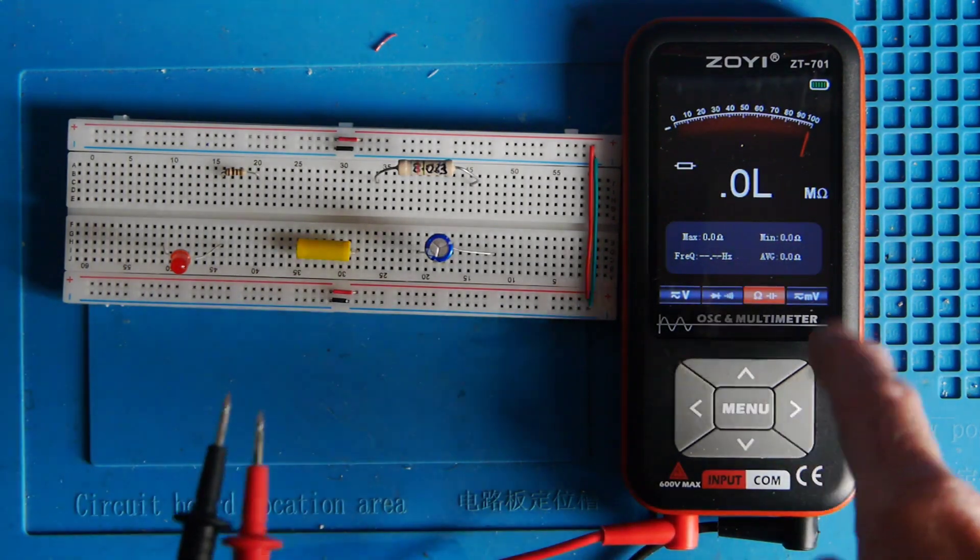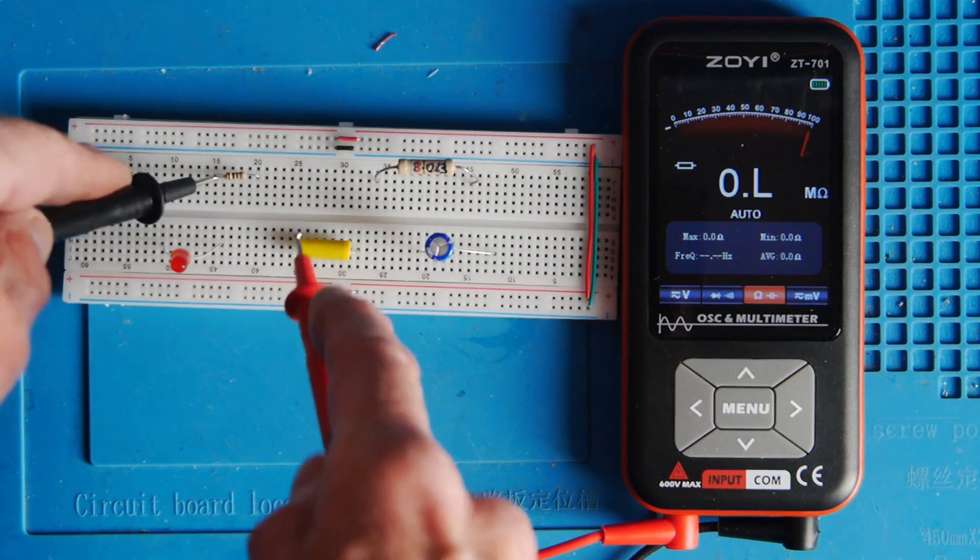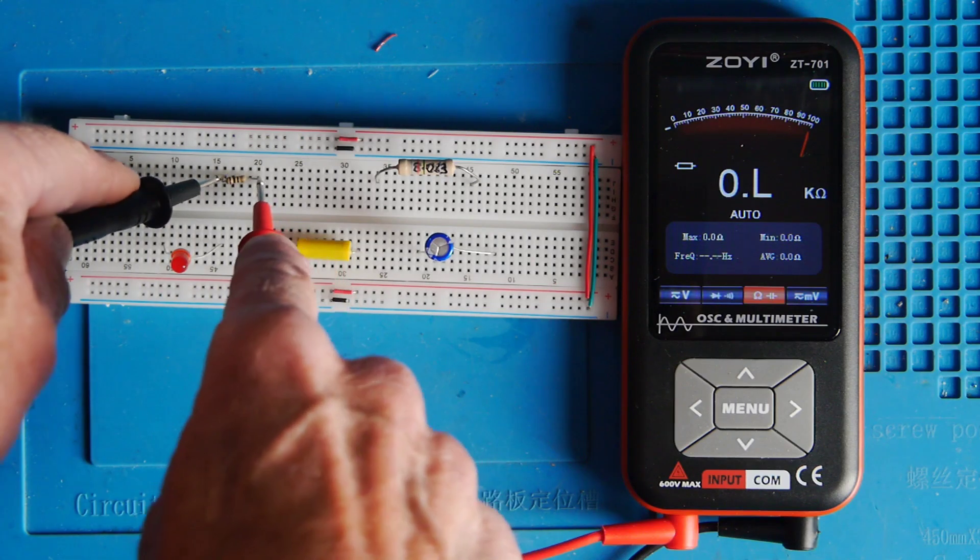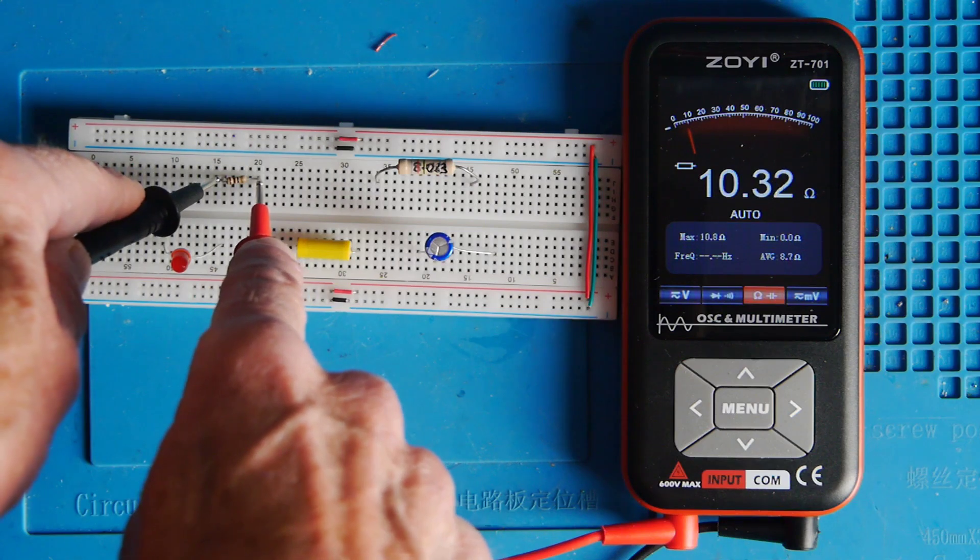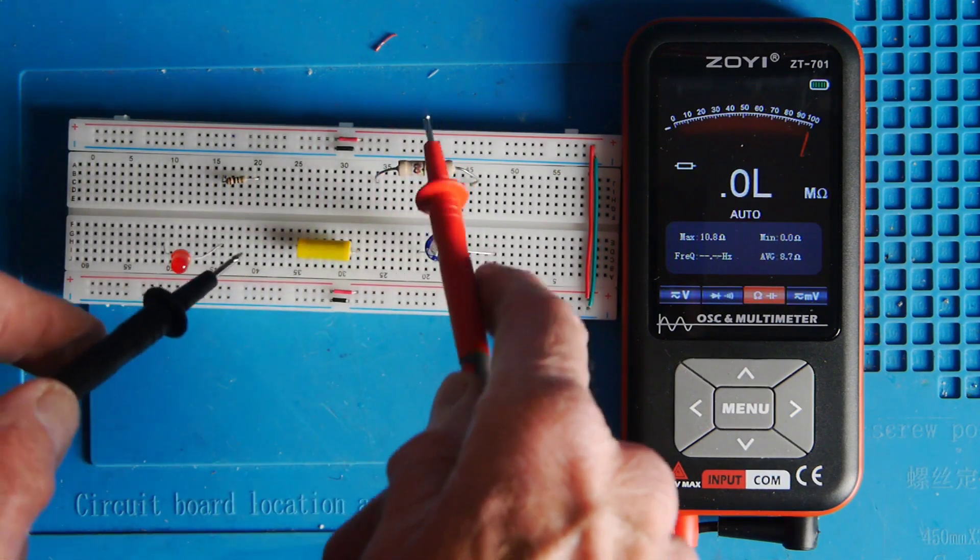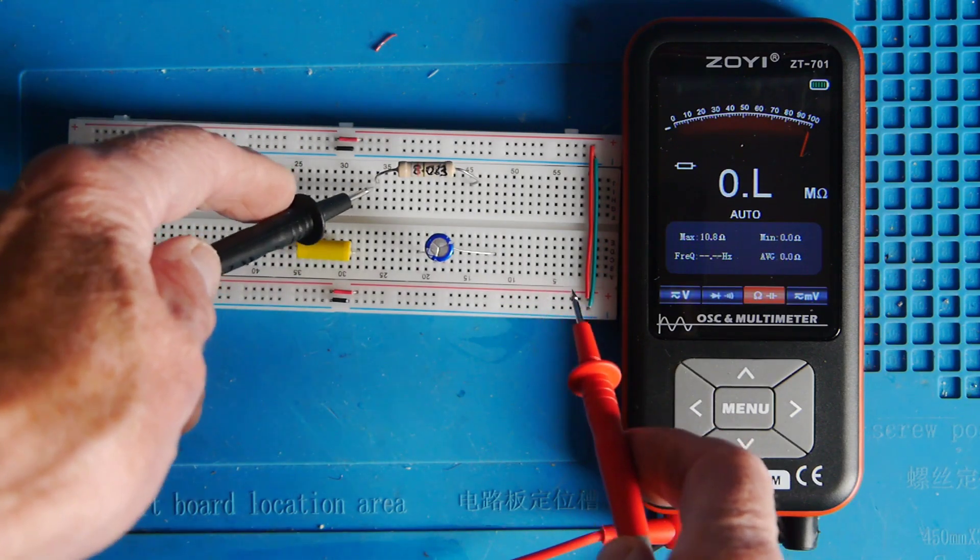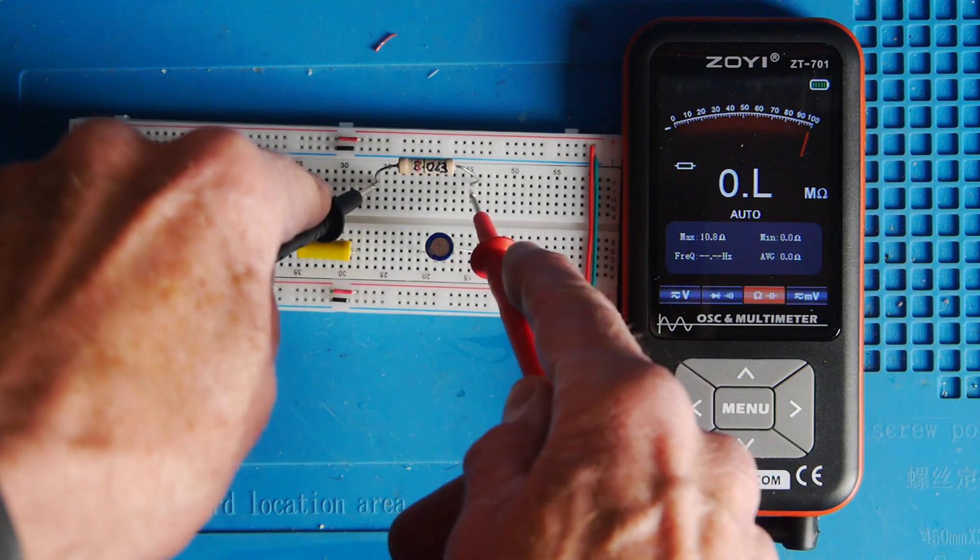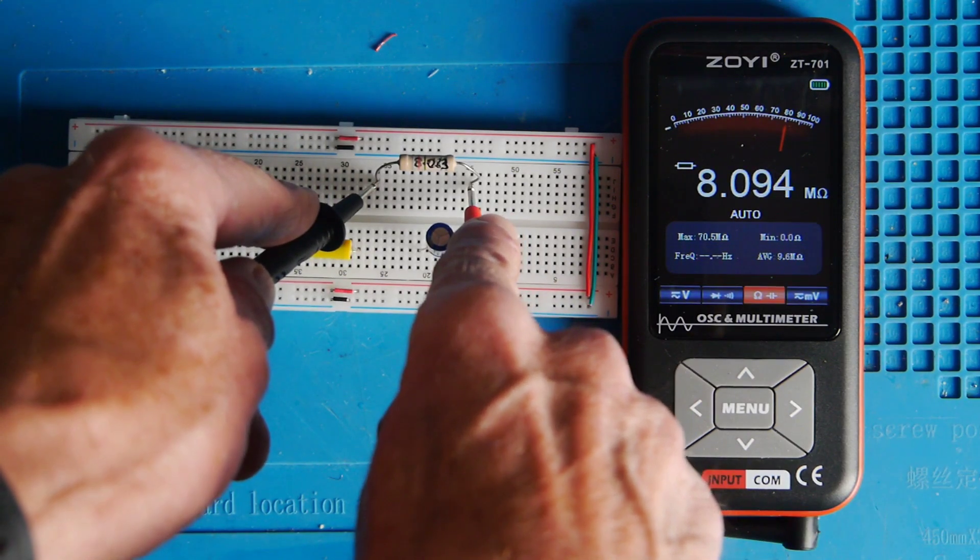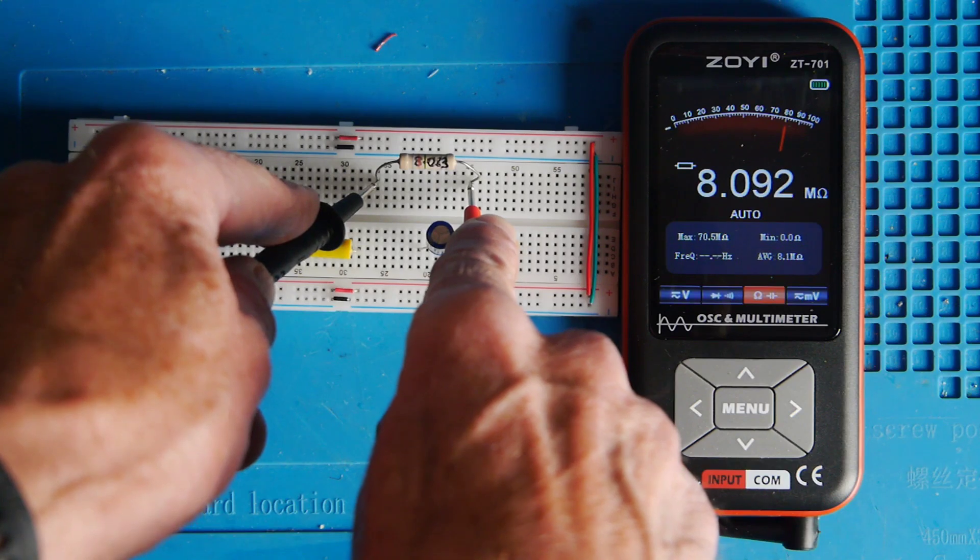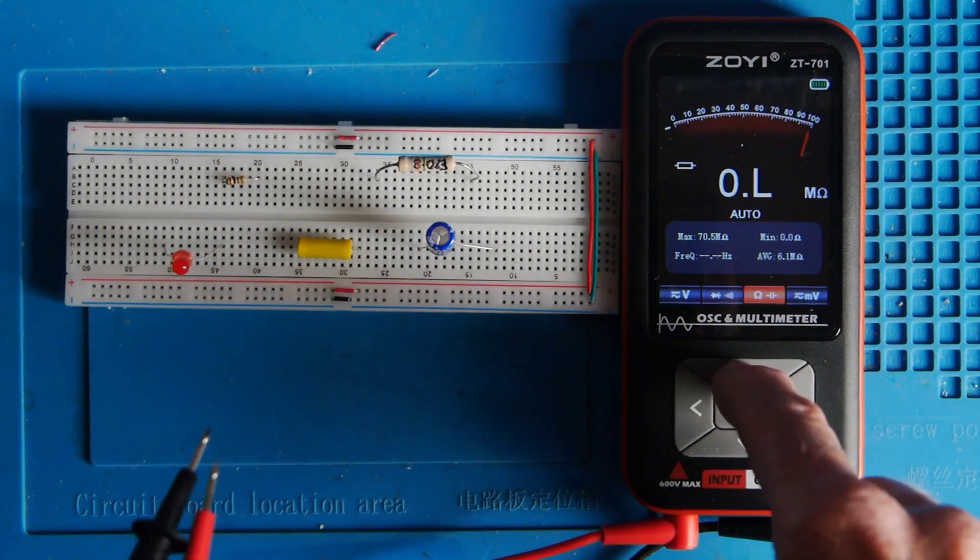So moving along then, we're now into resistance. So I've got opposite ends of the scale here. I've got 10 ohms. Yep, I think that's pretty good. And this resistor here actually checks out at about 8.09 on my LCR meter. That's 8.09 mega ohms. Let's see what this makes of it. It's quite a high resistance. There you go, yeah, pretty much agrees with the LCR meter actually, so that's good.